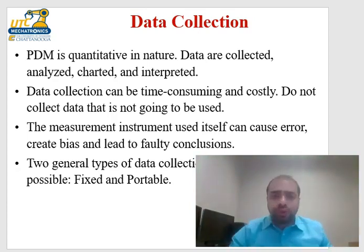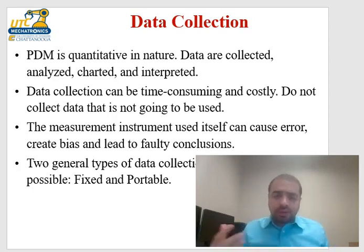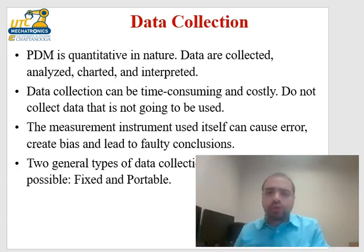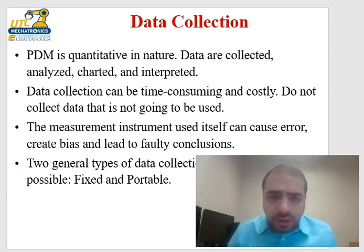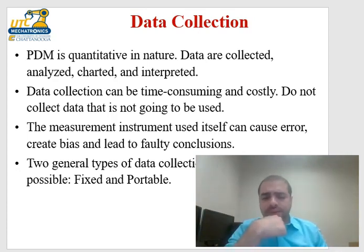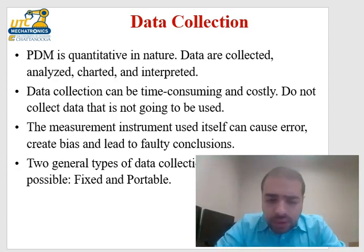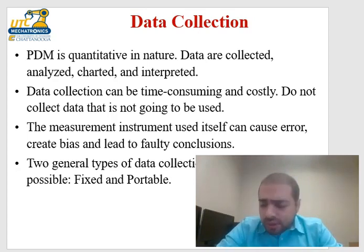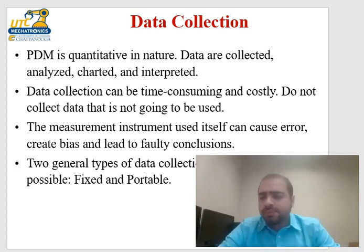Sometimes that previously collected data turns out to be important for understanding the cause of a failure. Or a new technology may be invented in the future that relies on that collected data, which can then be used to calibrate or investigate the new instrument. Also, the measurement instrument itself can cause errors and create bias leading to faulty conclusions — for example, temperature sensors have been improved significantly over the last 100 years.